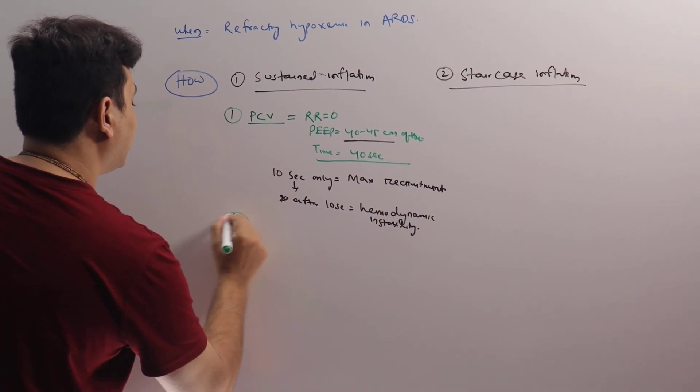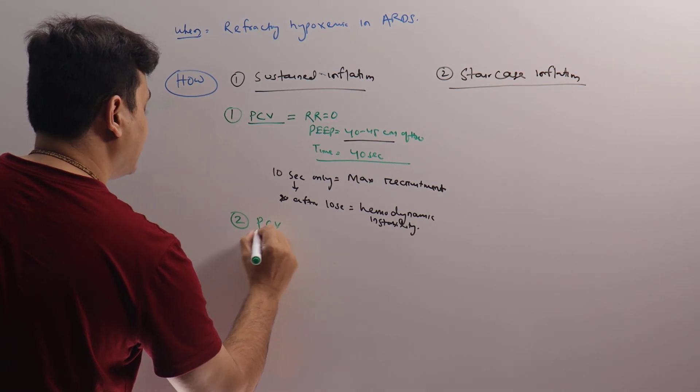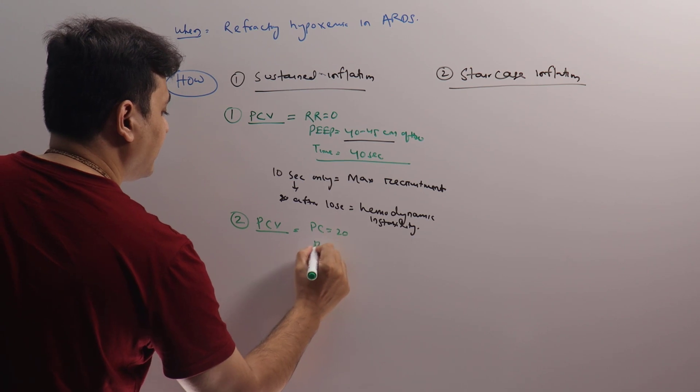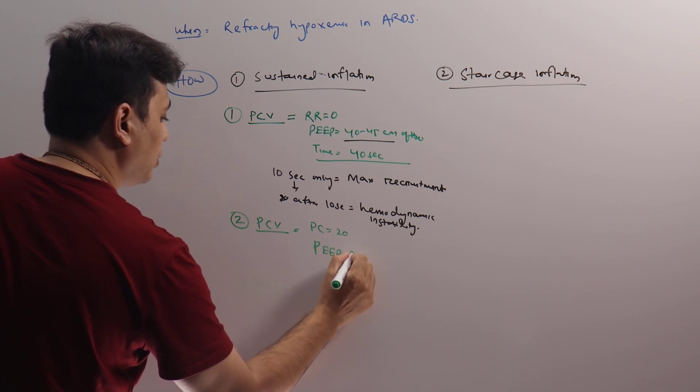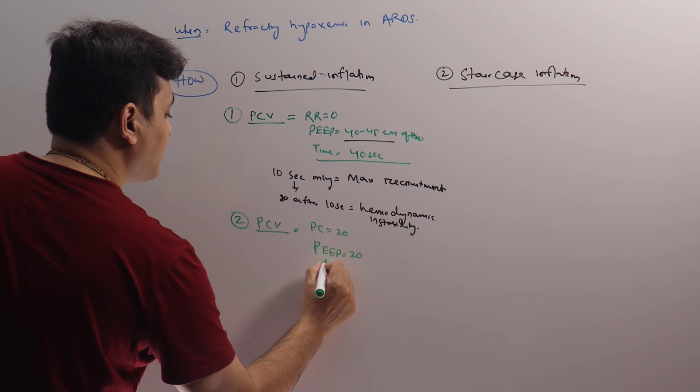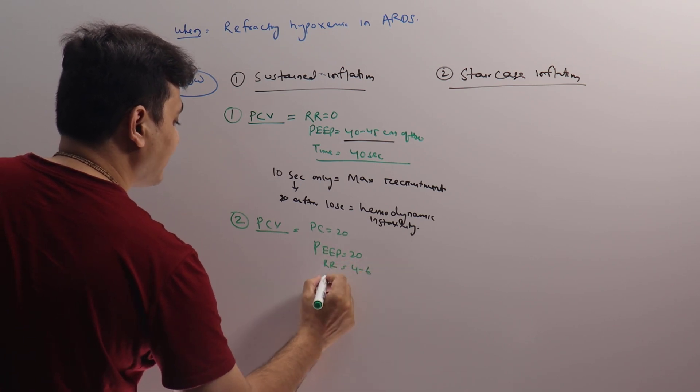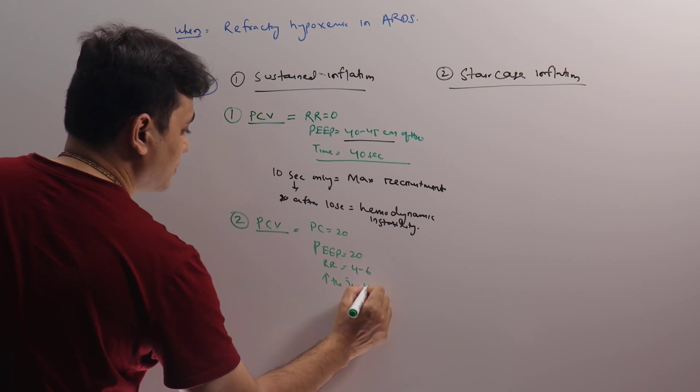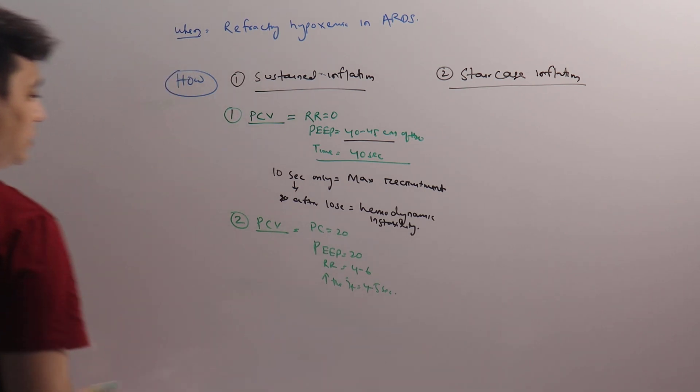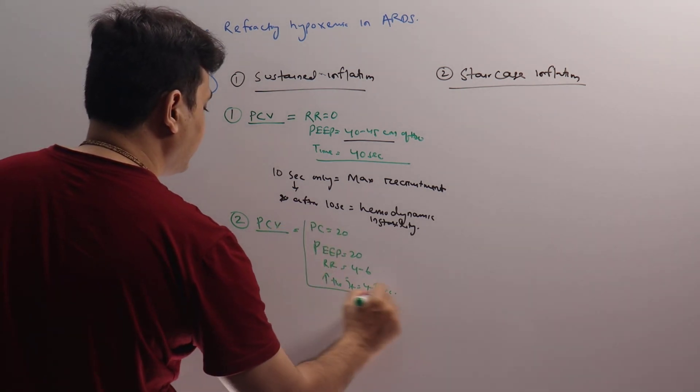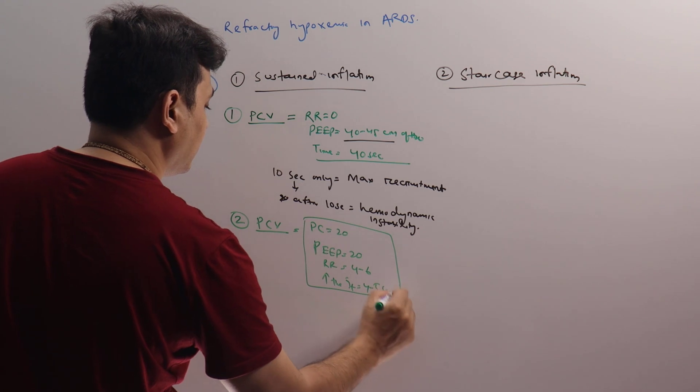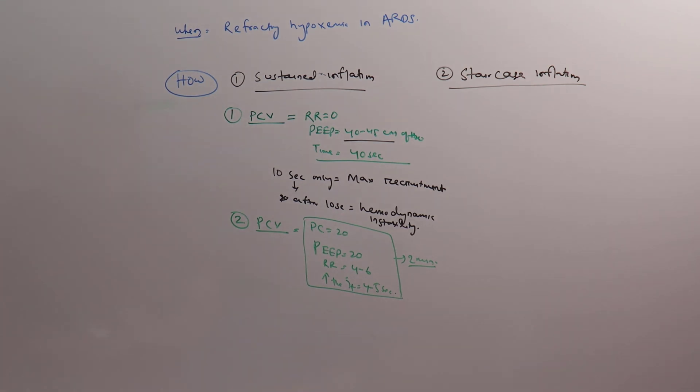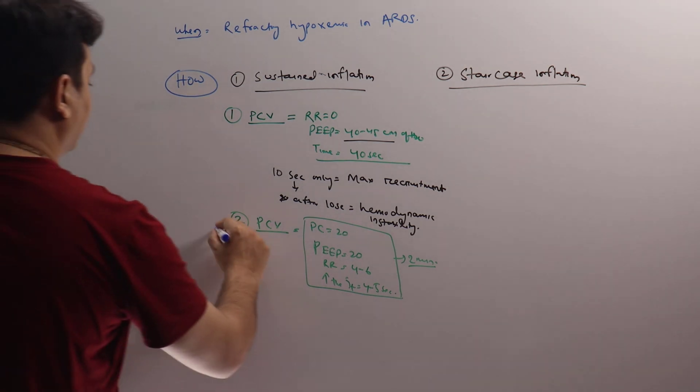Number two method: again in pressure control ventilation, put the pressure control at around 20, PEEP at around 20, put the respiratory rate at 4 to 6, increase the inspiratory time to at least 4 to 5 seconds, and keep everything for 2 minutes because we have to watch for hemodynamic instability.